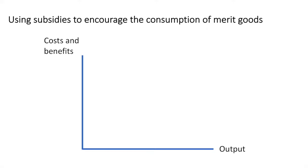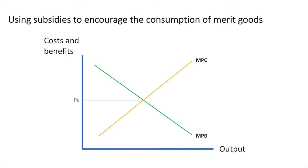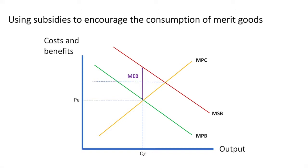Since this is a subsidy to encourage the consumption of vaccines, we are going to focus on the private benefit and social benefit. The free market equilibrium occurs where marginal private benefit is equal to marginal private cost. At price PE, quantity QE is consumed. This is problematic as an external benefit exists. MEB represents the marginal external benefit per unit. Thus the marginal social benefit curve is above the marginal private benefit curve.